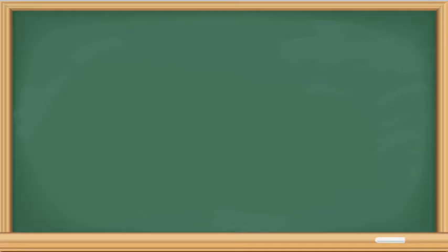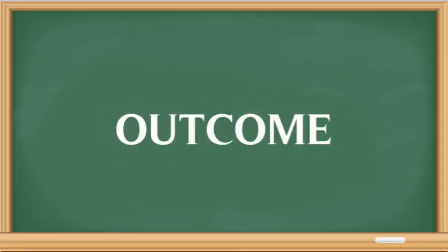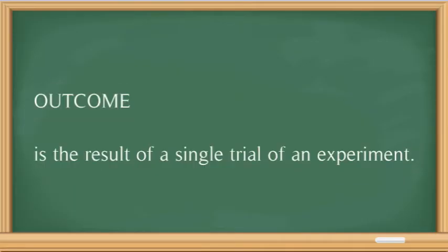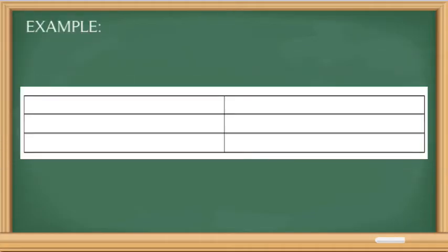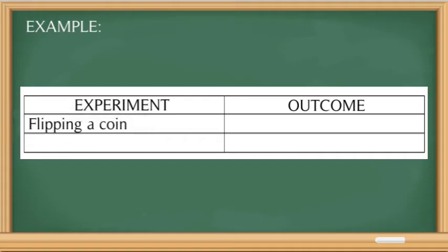Now, what do we mean when we say outcome of an experiment? An outcome is the result of a single trial of an experiment — it is the possible result of our experiment. For example, here we have an experiment and an outcome. Suppose we have an experiment of flipping a coin; our outcome after flipping a coin could be either heads or tails.